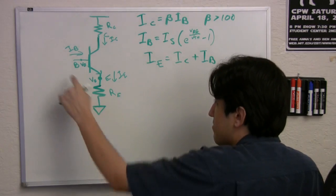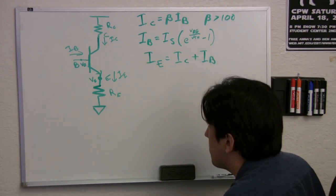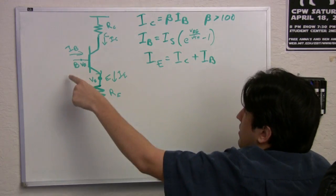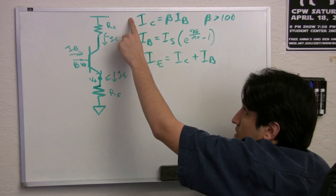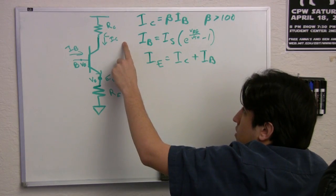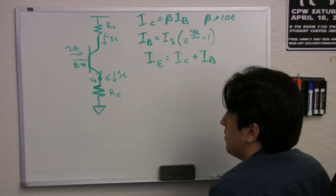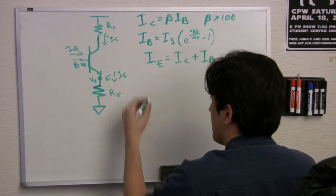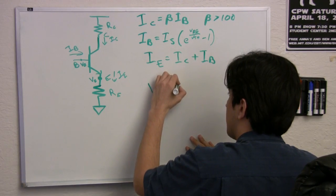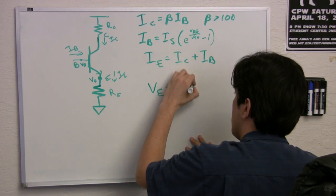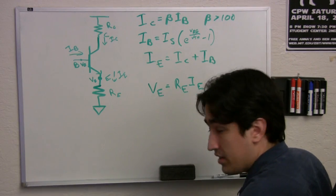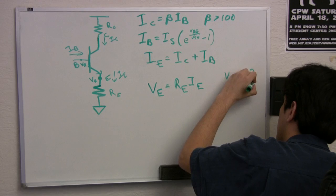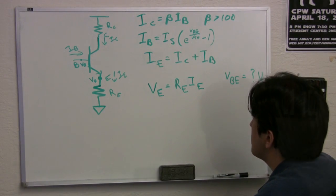So let's say, for the sake of argument, that VBE was something that we need, some number. That would mean that we have some current IB coming into the base, which means that we have some current IC coming into the collector, which defines an IE coming out of the emitter, which tells us what VE is because V equals IR, and we know R and we know IE. So we have VE equals RE times IE, which is completely defined assuming that VBE equals some number.